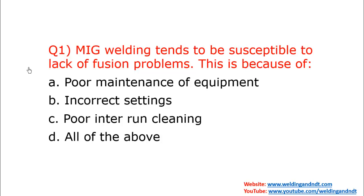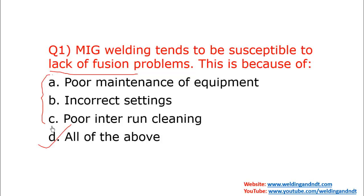Our first question is: MIG welding tends to be susceptible to lack of fusion problems — this is because of? Generally MIG welding is very prone to lack of fusion problems. Option A is poor maintenance of equipment, option B is incorrect settings, option C is poor internal cleaning, and option D is all of the above. The correct answer is all of the above, because all these reasons can cause lack of fusion.